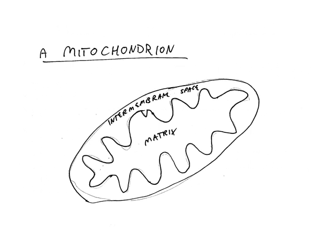Just a quick drawing in case medical school was too long ago: the mitochondrion is in a cell, and inside of it is a matrix, the inner mitochondrial membrane, the outer mitochondrial membrane, and there's an intermembrane space. In the next slide, we're going to zoom in on this inner mitochondrial membrane and have a direct look at the electron transport chain.